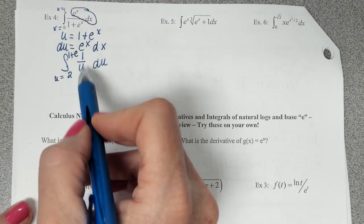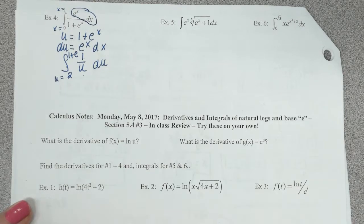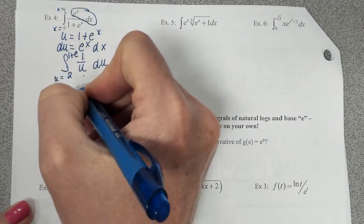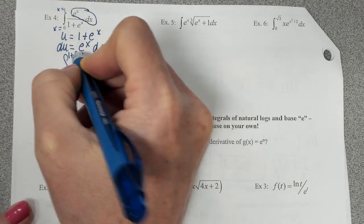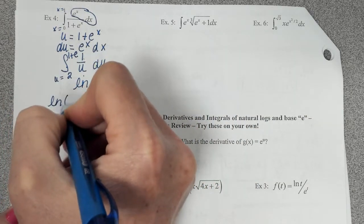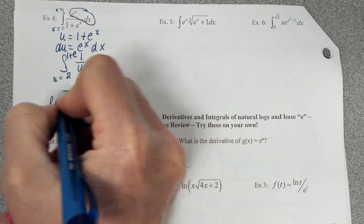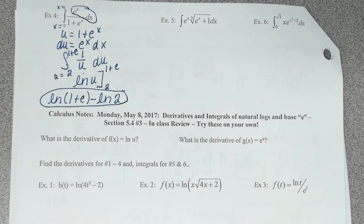But now I have everything written in terms of u instead of in terms of x. So I just have to think, what's the integral of 1 over u? You've got to think back. We did this a while back. Anybody remember the integral of 1 over u? Natural log. Good. So this integral then is going to be the natural log of u. We have to plug in 1 plus e and 2. We plug in the top number first. So it's a natural log of 1 plus e minus the natural log of 2. Remember that integration is finding the area under the curve. Bounded by the curve and the x-axis and the x values that are given.